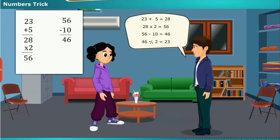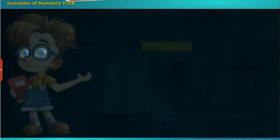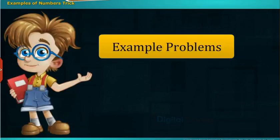Yes, you are amazing! How do you know that? 23 plus 5 equals 28, 28 multiplied by 2 equals 56, 56 minus 10 equals 46, 46 divided by 2 equals 23. Is that clear? Yes, and thanks for the trick. Let us see some example problems and tricks on numbers.